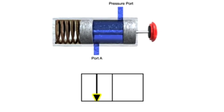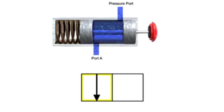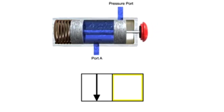A solid arrow indicates the direction of liquid flow. The first position of this valve allows fluid to flow from the pressure port to port A, so an arrow is drawn in the first box to indicate fluid flow. A T indicates that a port, or way, is blocked or closed. This valve's first position has no ports blocked, but its second position blocks both. Two T's are added to illustrate the lack of fluid flow in the second position.